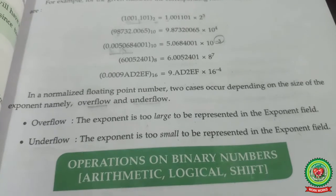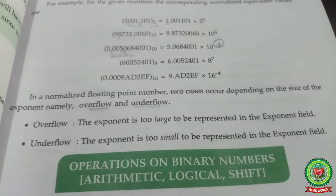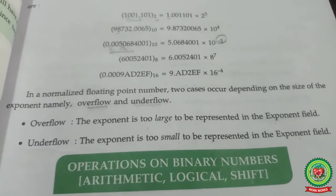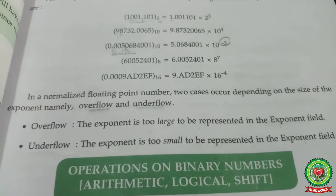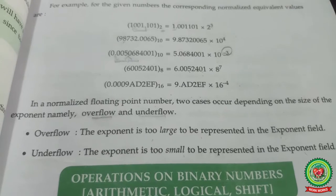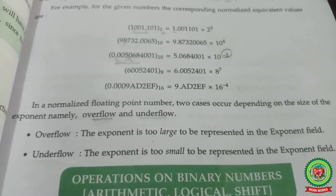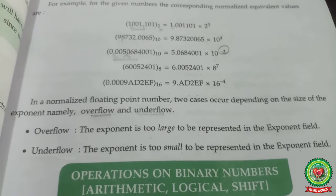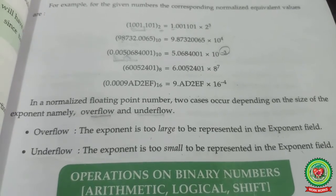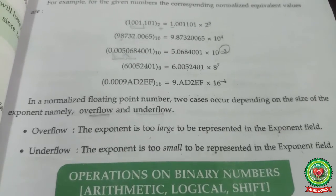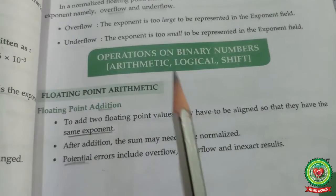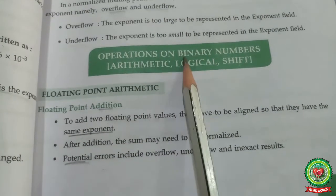Students, while doing normalization, two cases can occur depending on the size of the exponent: overflow and underflow. Overflow means the exponent is too large to be represented in the exponent field. Underflow means the exponent is too small to be represented in the exponent field. Our next topic is operations on binary numbers.